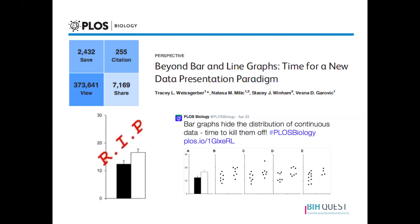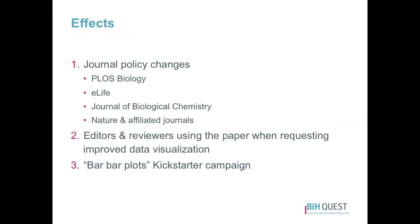To address this issue, we published a paper in PLOS Biology in 2015. This paper was viewed more than 100,000 times in the first month it was published, and it has since gone on to be cited and contribute to policy changes for a number of journals encouraging authors to use more informative visualizations of continuous data. Some of the early journals that adopted changes were PLOS Biology, eLife, and the Journal of Biological Chemistry. Many editors and reviewers use the paper when requesting that authors improve their visualizations during the revision process. The paper was also instrumental in starting the Bar Bar Plots Kickstarter campaign, which targeted neuroscience journal editors and encouraged them to implement policy changes.